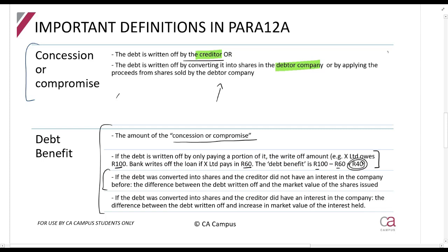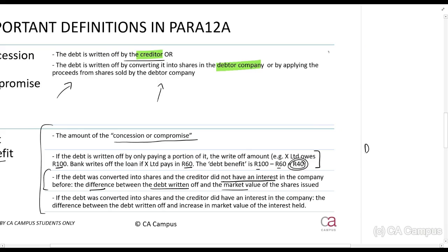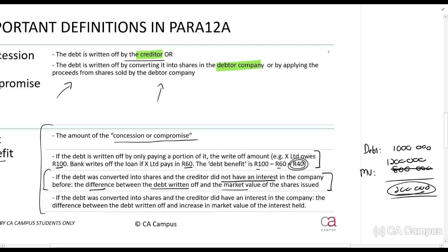Remember, you can also issue shares. If the creditor did not have any shares in the company, the value of the debt benefit is the difference between the debt written off and the market value of the shares. So if I owe you a million rand and I give you shares now worth 800,000 rand, I've scored 200,000 rand - that's the debt relief. However, if I give you shares worth more than a million rand - say 1.2 million rand - this section will not apply because I've actually paid you more than what you were owed.